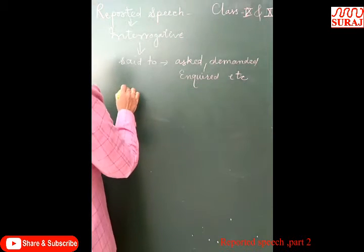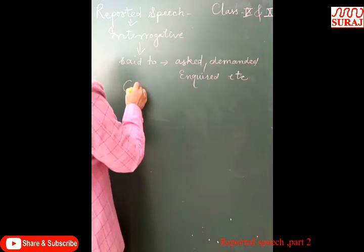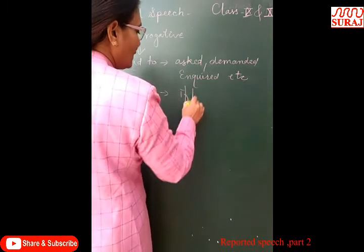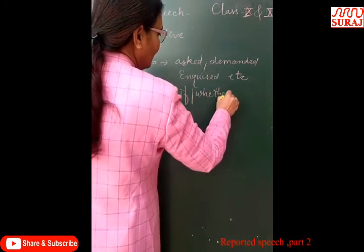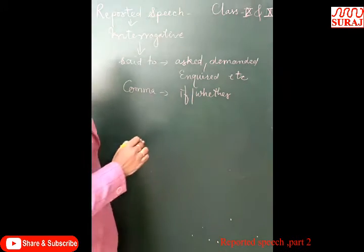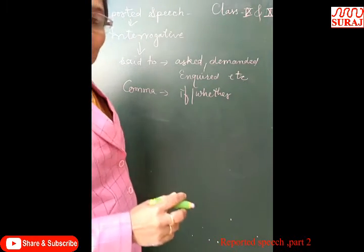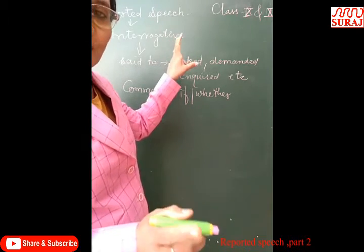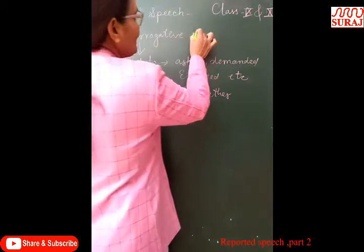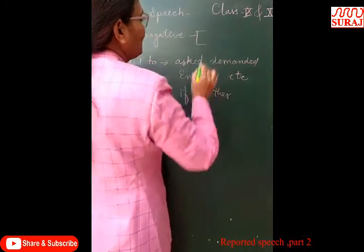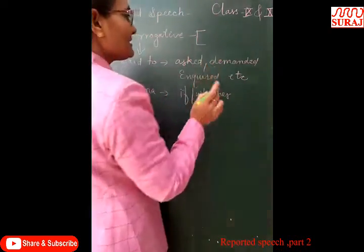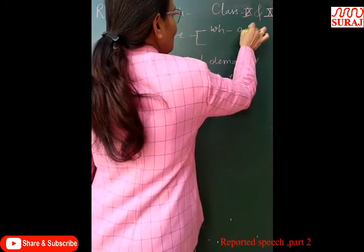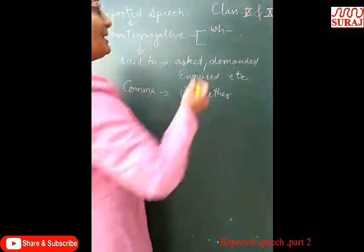Next, we have to replace the comma. The comma will be replaced by 'if' or 'whether.' However, sometimes we don't need to write 'if' or 'whether' — specifically when the interrogative sentence starts with the WH family.